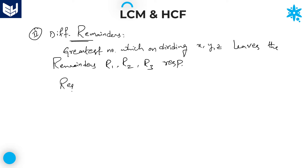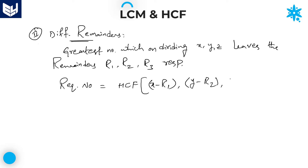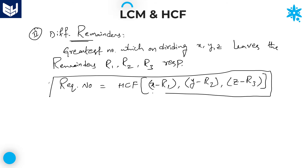Whenever the remainders are different, the required number is very simple. Just as in the same remainder case you subtracted R from each number, here also you subtract each respective remainder. The required number is HCF of (x minus R1), (y minus R2), and (z minus R3). Subtract the respective remainders from the given numbers, then calculate the HCF of those results. This is the required number when remainders are different.